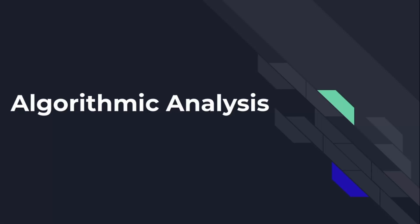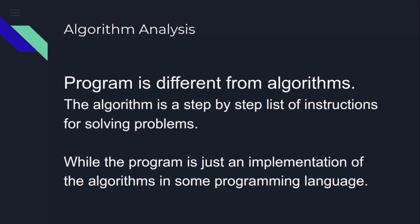Let's clarify something before proceeding further. A program is different from an algorithm. As we have already seen, an algorithm is a step-by-step list of instructions for solving problems, while a program is just an implementation of the algorithm in some programming language. We know that one algorithm can be implemented in many ways, so we can write the same program in many different ways.